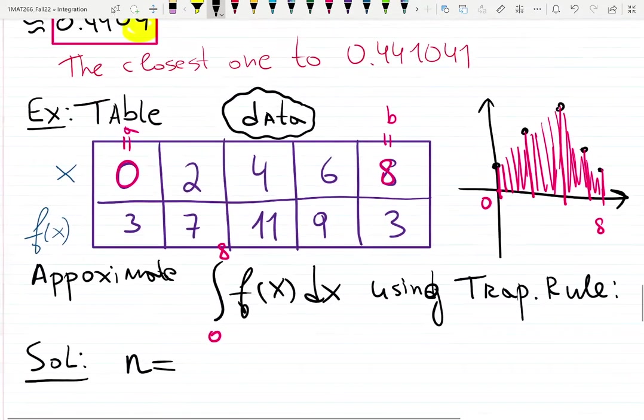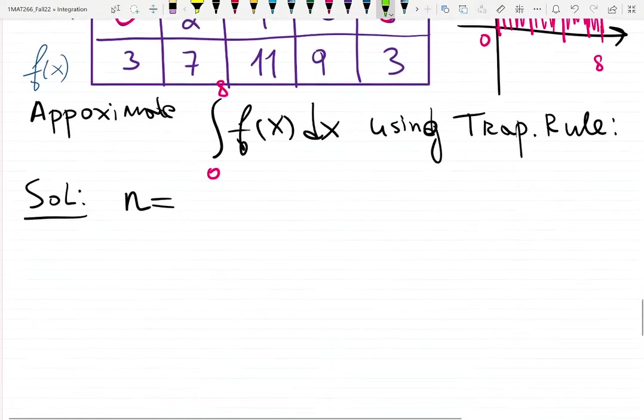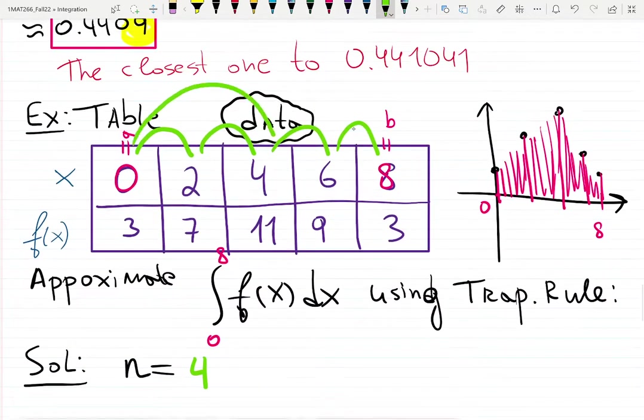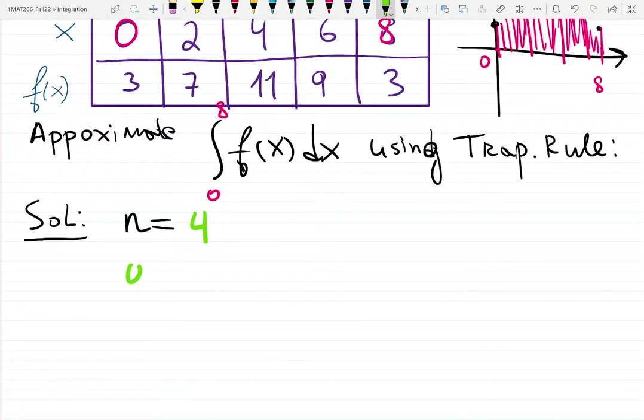n = 4. How do you know? It's five endpoints: from 0 to 2, 2 to 4, 4 to 6, 6 to 8—four intervals. They don't have to give it to you. You could jump intervals if you want, but then you have even fewer data points available. So n = 4.